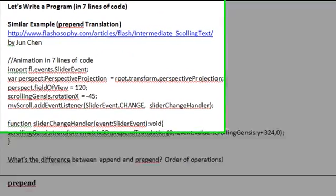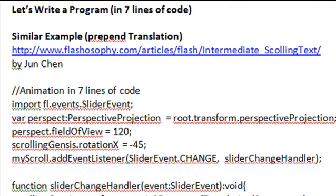Now the application we're going to be working with is very similar to an application written by Jun Chun of www.flashosophy.com. And so we can go ahead and do this website. You can download the application. I'm going to open it up and show it to you. And then we're going to muck it up. We're going to make some changes and describe this. Basically, what we're going to do, we're going to prepend translation to create kind of a Star Wars scrolling text.